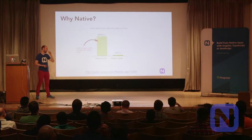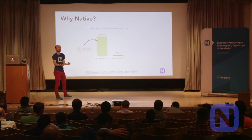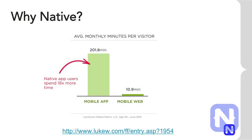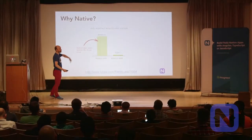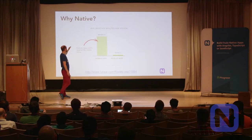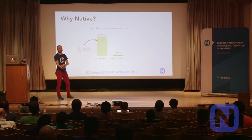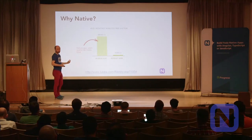Before getting into code sharing, let's start with why we even need native or mobile. Native applications are usually for situations where you keep reusing the same services over and over again — like a mobile app that tells you train times, which you use a couple of times a day, every day of the week. On average, people spend about 18 times more with mobile applications versus websites.